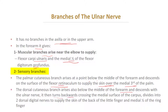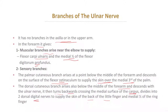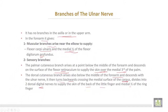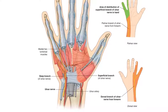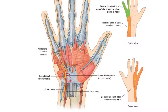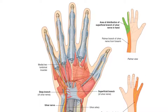The dorsal cutaneous branch turns backward, crossing the medial surface of the carpal bones, and divides into two dorsal digital nerves to supply the skin of the back of the little finger and the medial half of the ring finger. The ulnar nerve passes superficial to the flexor retinaculum, then divides into superficial and deep branches in the palm, supplying the medial third of the dorsum, the medial one and a half fingers on the back, and also the medial third of the palm and medial one and a half fingers from the front.